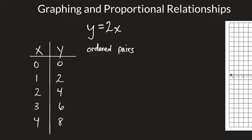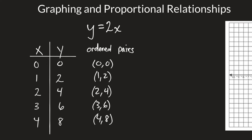We can call these ordered pairs: (0, 0), (1, 2), (2, 4), (3, 6), and (4, 8). The first number is the x value — the input — and the second number is the y value — the output.